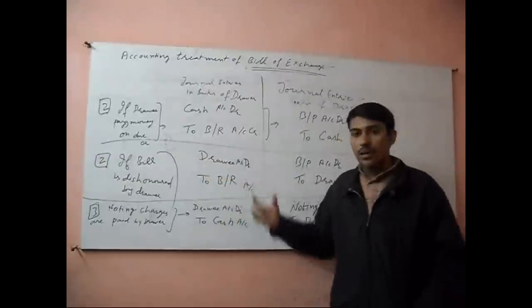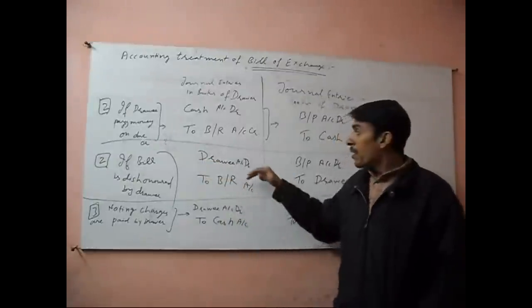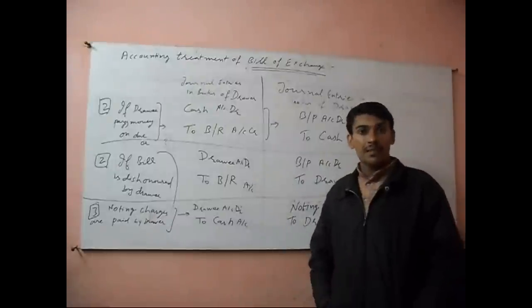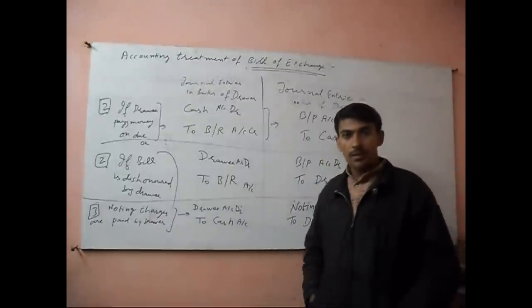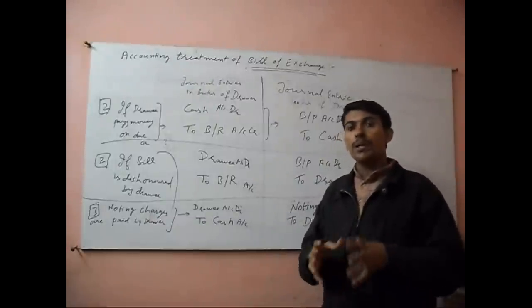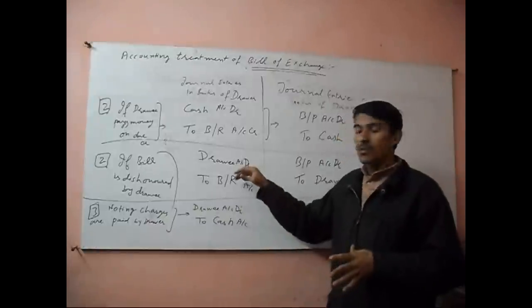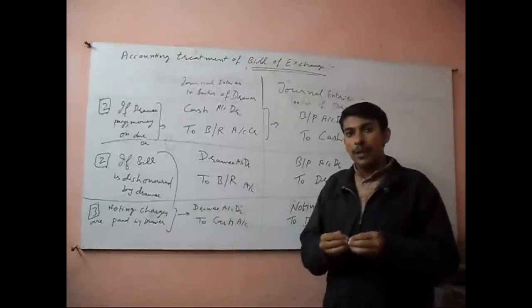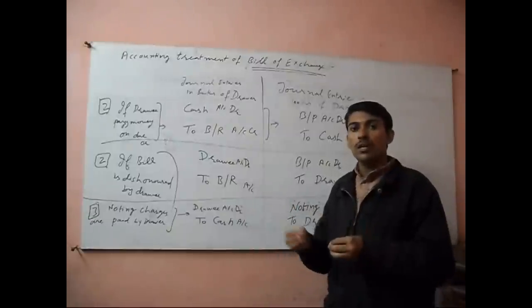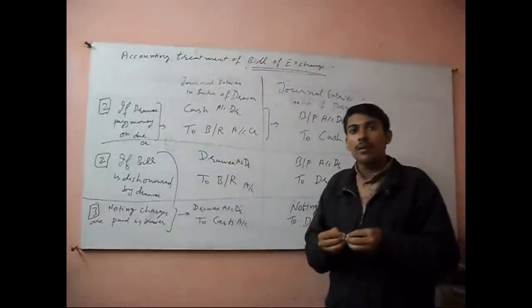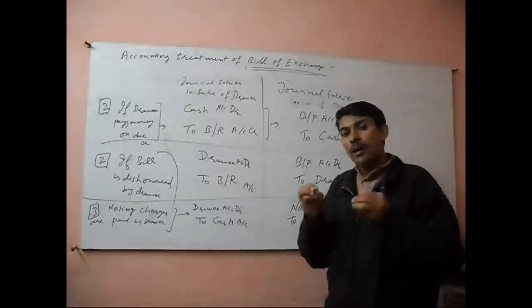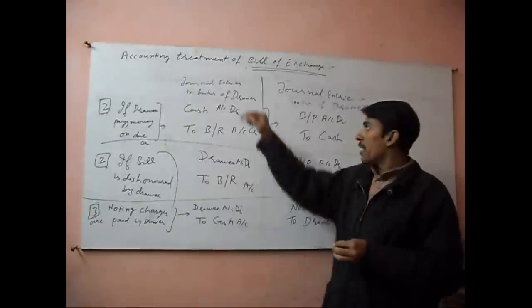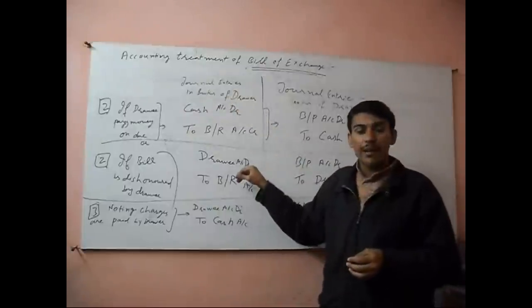And we will write in the journal book: Drawee account debit to bill receivable account. Now prime duty to pay the payment is of Drawee. Even if payee goes to Drawee for getting money and bill is dishonored, at that time Drawee is responsible to pay the money.